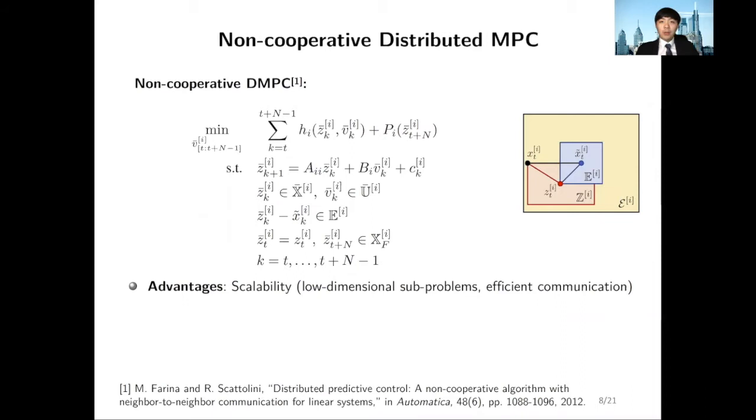One way to approximately solve this problem is the non-cooperative distributed MPC technique proposed by Farina and Scattolini. They truncated the time horizon to be finite, so you have a receding horizon control or MPC problem. Here, you need to offline construct distributed terminal cost functions and terminal sets to guarantee feasibility and stability of the closed-loop system.